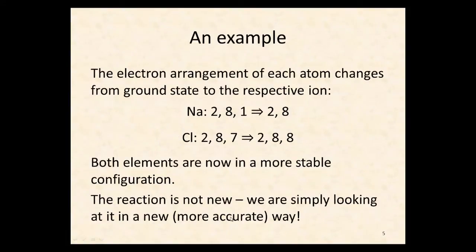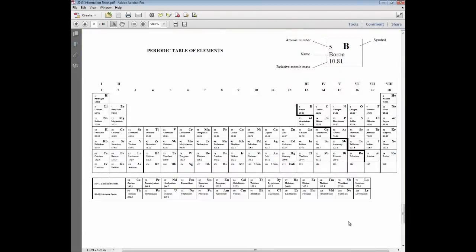So the electron arrangement of each atom changes from ground state to the respective ion. We can see that sodium has two, eight and one electrons. It loses one of those electrons and becomes a species with two and eight electrons. So if we have a look at the periodic table here, we have sodium, which is down here. So we've got two from the first row. We have eight, one, two, three, four, five, six, seven, eight and one.